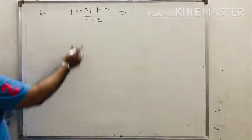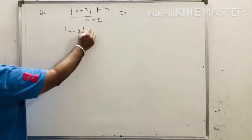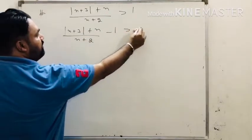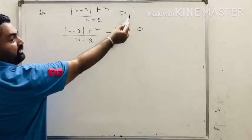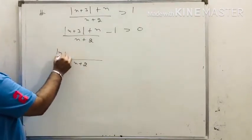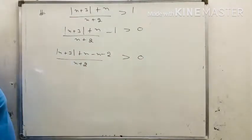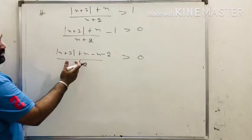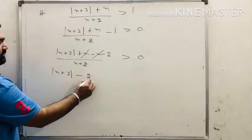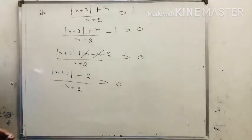The next question is modulus of x plus 3 plus x divided by x plus 2 greater than or equals to 1. We shift the 1 to the left side: modulus x plus 3 plus x upon x plus 2 minus 1 greater than or equals to 0. Taking the common denominator x plus 2, we get modulus x plus 3 plus x minus x minus 2 upon x plus 2. The x terms cancel, leaving modulus x plus 3 minus 2 upon x plus 2 greater than or equals to 0.